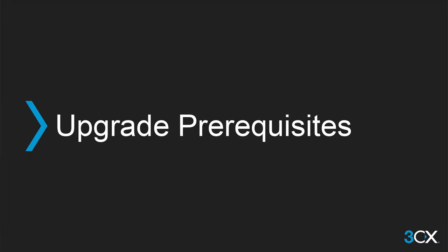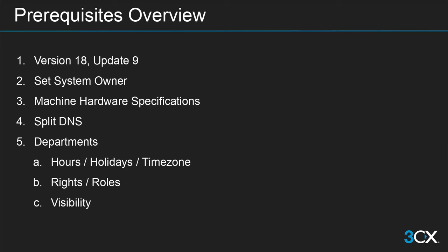Let's get started with the upgrade prerequisites. We very recently released a blog post on our website with a simple checklist of what you need to make sure you have done on your version 18 PBX before moving on to version 20. The first item is you will need to be on version 18 update 9. We'll also talk about the system owner, hardware specifications, networking with split DNS if you are using the 3CX apps, and the departments and their setup.